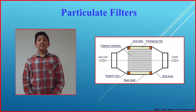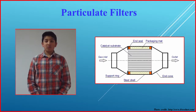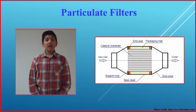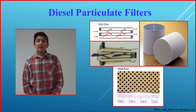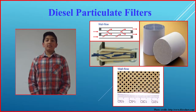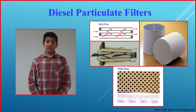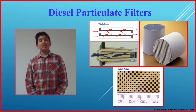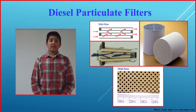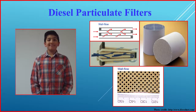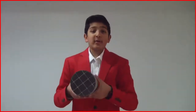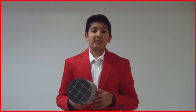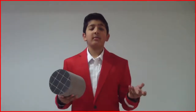The devices used to control pollution from diesel automobiles are called particulate filters. They have alternate plugged square channels, forcing the exhaust through the walls to filter out any particulates. However, use of a wall flow filter increases back pressure, which also increases fuel consumption.